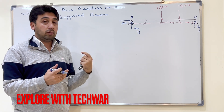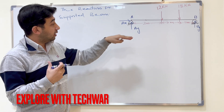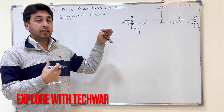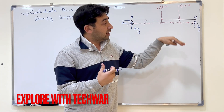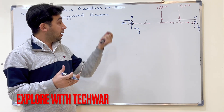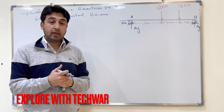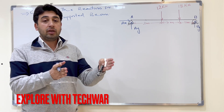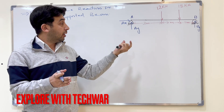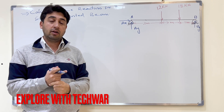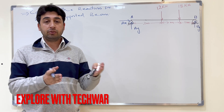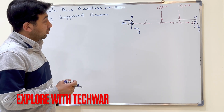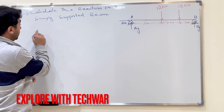I am assuming AY acts upward, AX acts to the right, and BY acts upward. These are assumptions. After solving, if we get a positive sign for these values, our assumption is correct. If we get a negative sign, the assumed direction was wrong and we must reverse it.